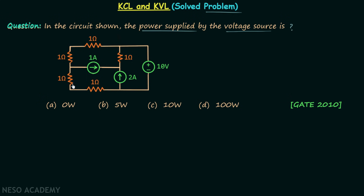When you look at the given circuit you will find there is only one voltage source, and therefore we are required to calculate the power supplied — or we can say the power delivered — by this voltage source. To have the power delivered we need the voltage and we need the current.